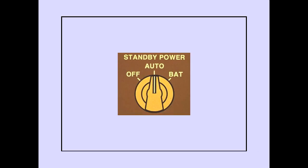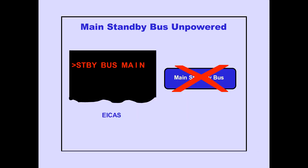Rotating the standby power selector to battery with the battery switch on disables the main battery charger and allows the standby bus to be powered from the main battery. The battery position is used for ground operations only. The ICAS advisory message 'standby bus main' is displayed if the main standby bus is unpowered.